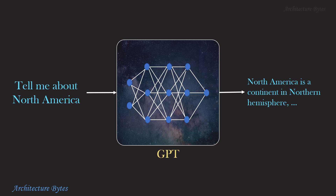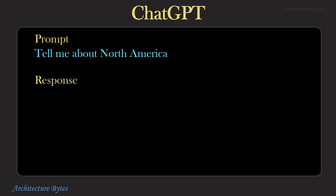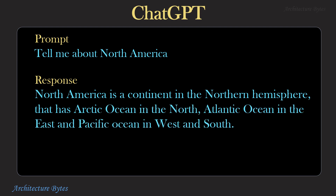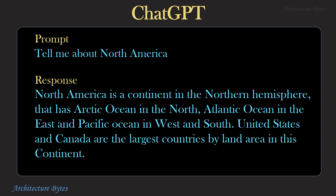It is important to understand that large language models do not have a database where training data is stored and searched for generating text. All they have are weights and neurons representing mathematical functions. When you prompt ChatGPT with 'tell me about North America,' this prompt is broken into tokens, resulting in millions or billions of calculations depending on the number of weights. It generates an output starting with the token that has the highest probability of being meaningful, then the next token, and so on. Large language models are not trying to recall facts — their strength is generating human-readable text on the fly, though there is no guarantee the output will always be right.